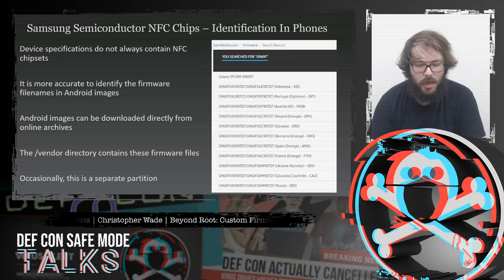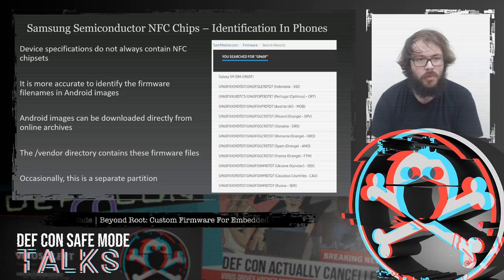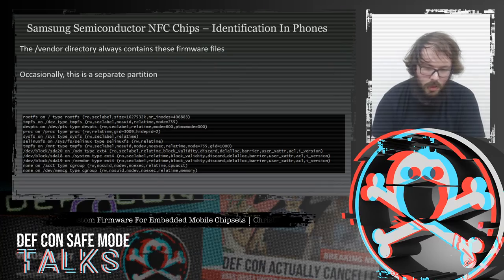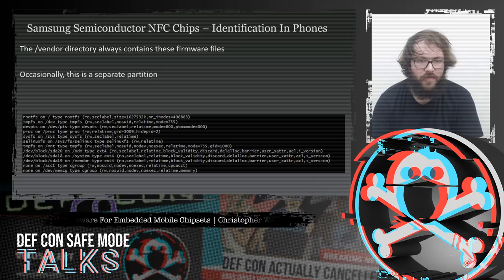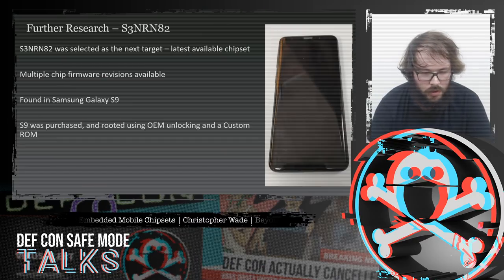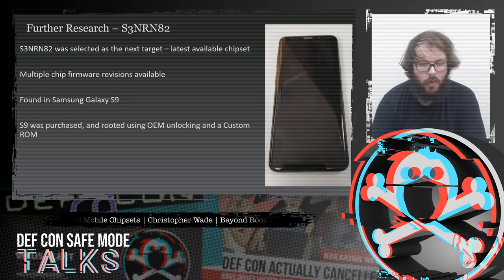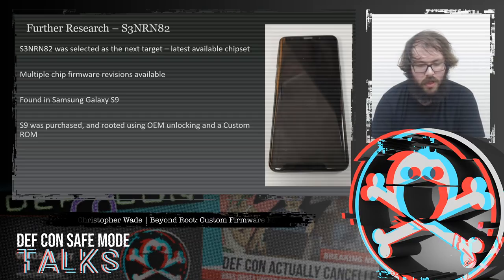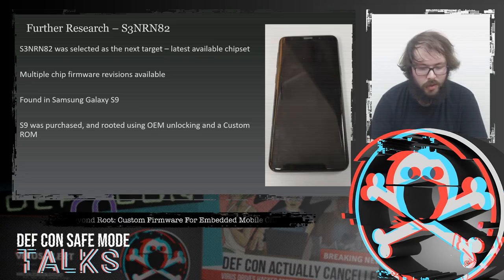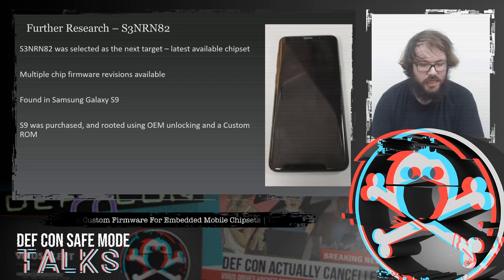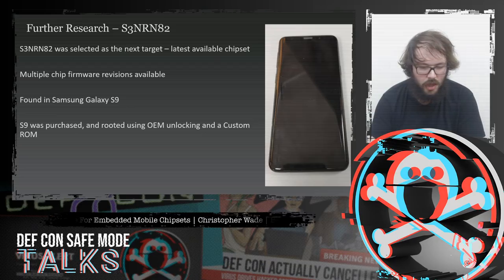Occasionally, vendor partitions are not stored in the ROM download because they're part of a special vendor partition deployed to the phone and can only be extracted from a physical device, but this still gave insight into what chipsets were being used. I found the S3NRN82 was the latest chipset after looking through these and found multiple chip versions in different firmware downloads. I decided to go with the Samsung S9, which used this chip, rooted it using OEM unlocking and a custom ROM, and started investigating.